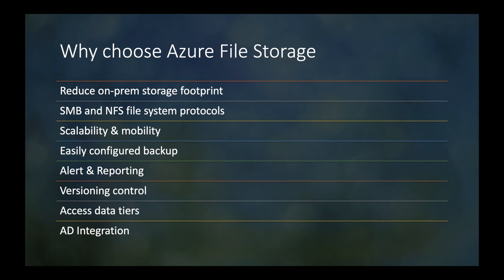Obviously the more versioning you have the more space you take, but that's really up to your business — and it should be a decision that incorporates compliance and legal. Then you have access data tiers, which works hand in hand with reducing on-prem storage footprint. Data you're accessing a lot can be kept on-site in the hot tier, so your on-prem server doesn't need to be five terabytes anymore — you can be fine with a terabyte or whatever fits your organization. Anything not being accessed frequently — say, documents not touched for more than six months — goes into the cold tier and stays in the cloud.